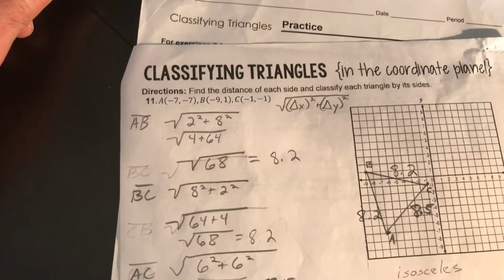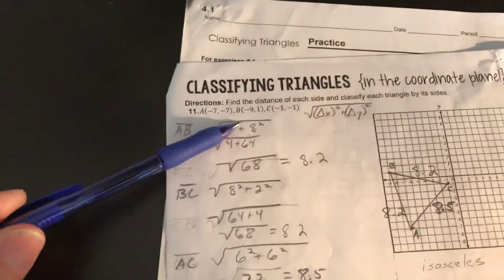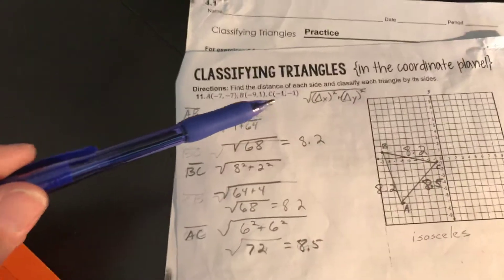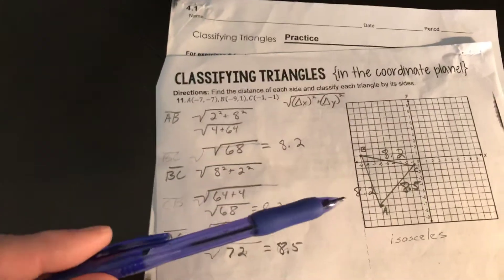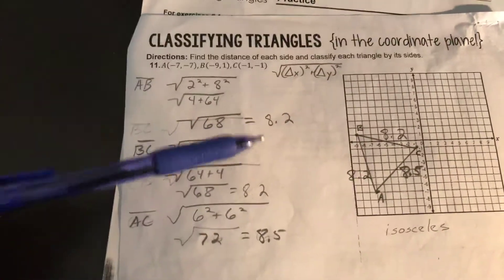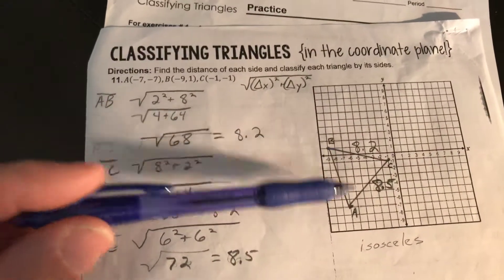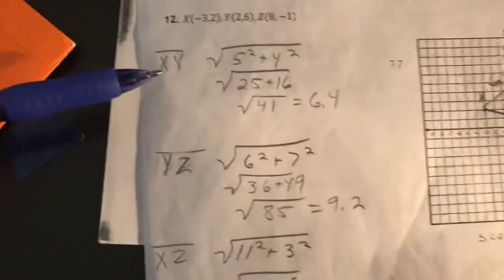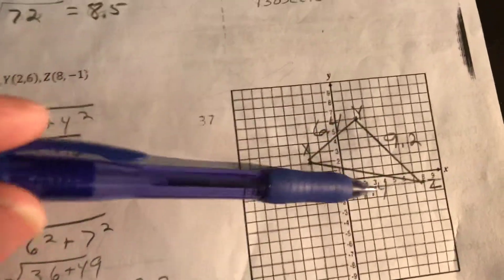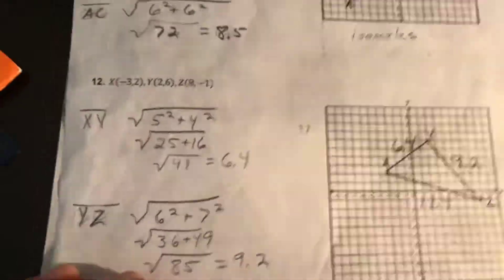On the back, the last two problems involve finding the side lengths to classify each triangle. You use the distance formula to find all three sides. For the first triangle, we get 8.2, 8.2, and 8.5 — that's an isosceles triangle. For the second, using the distance formula all three sides are different, so that's a scalene triangle.